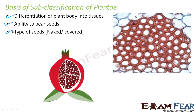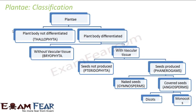Now we will focus on the different categories into which the entire vast plant kingdom was classified. This screen shows the entire flow of classification of plants. The plant kingdom is classified into two types based on body differentiation: plant body not differentiated — known as thallophytes — and plant body well differentiated. Plants with a well-differentiated body were again divided into two types based on whether they have vascular tissue or not.